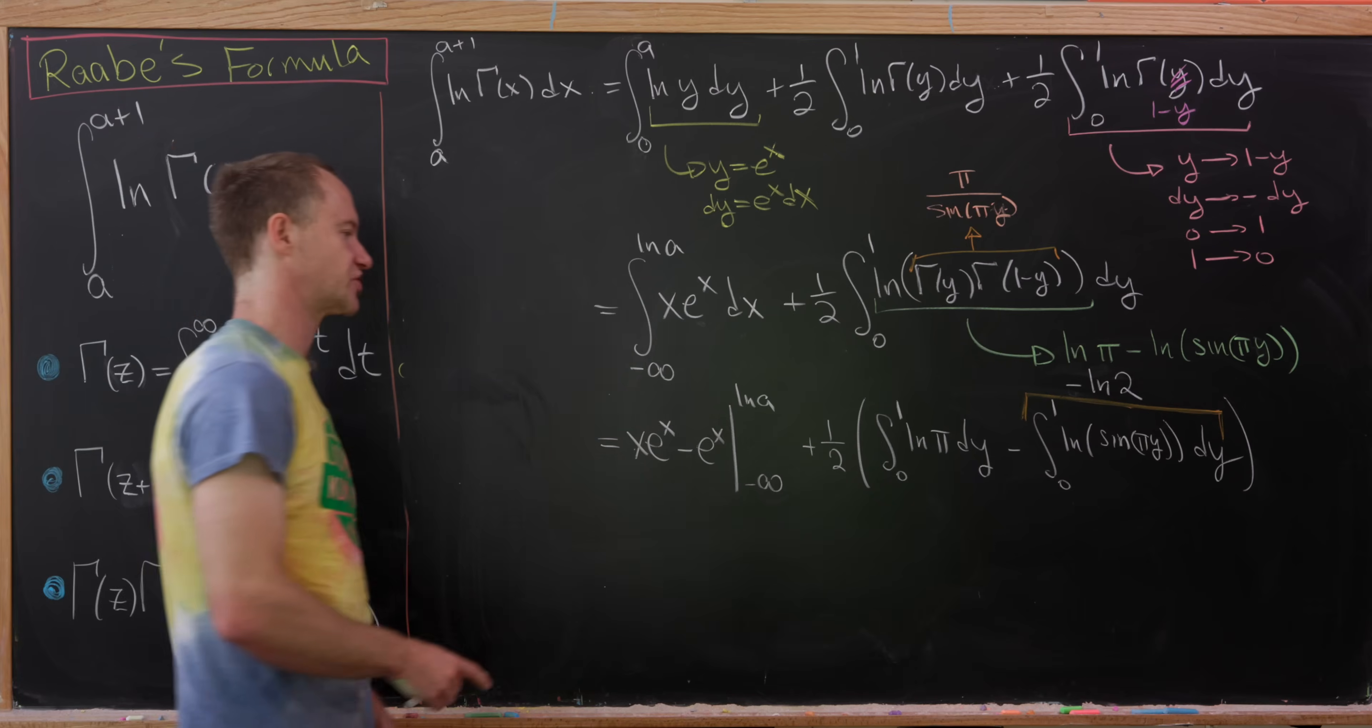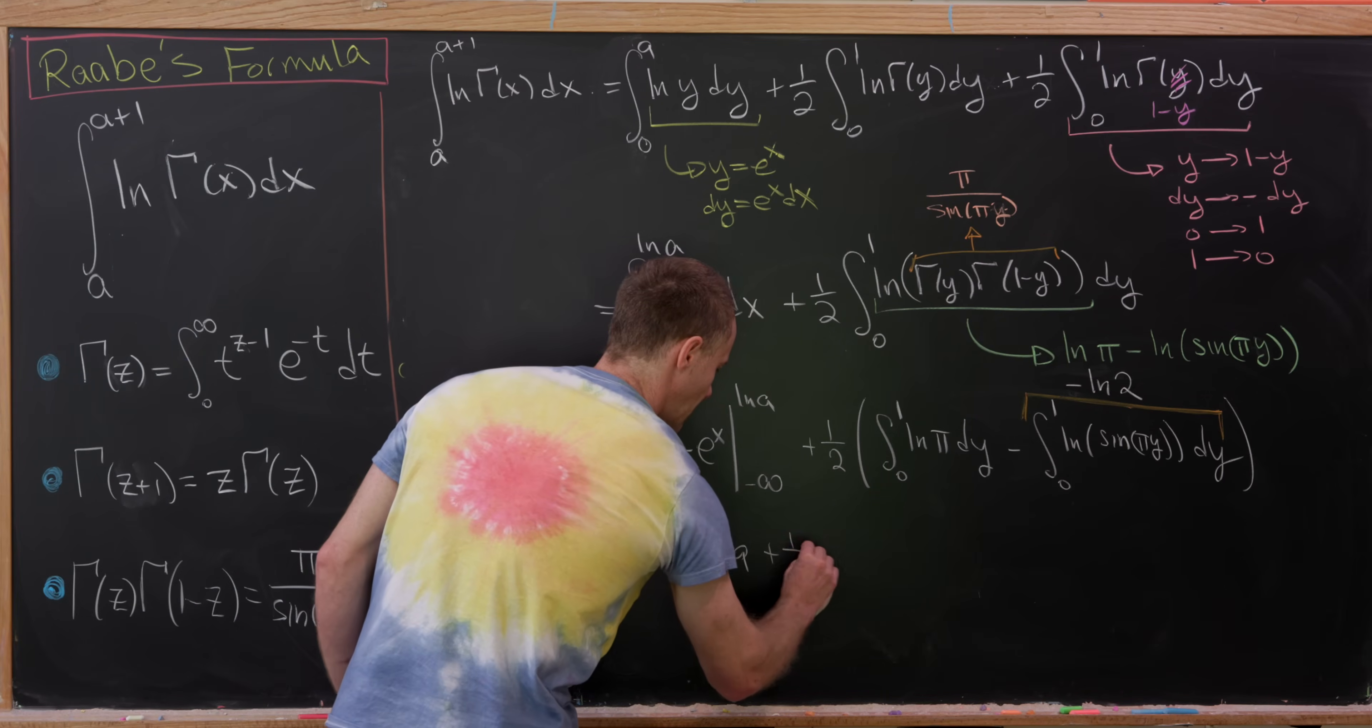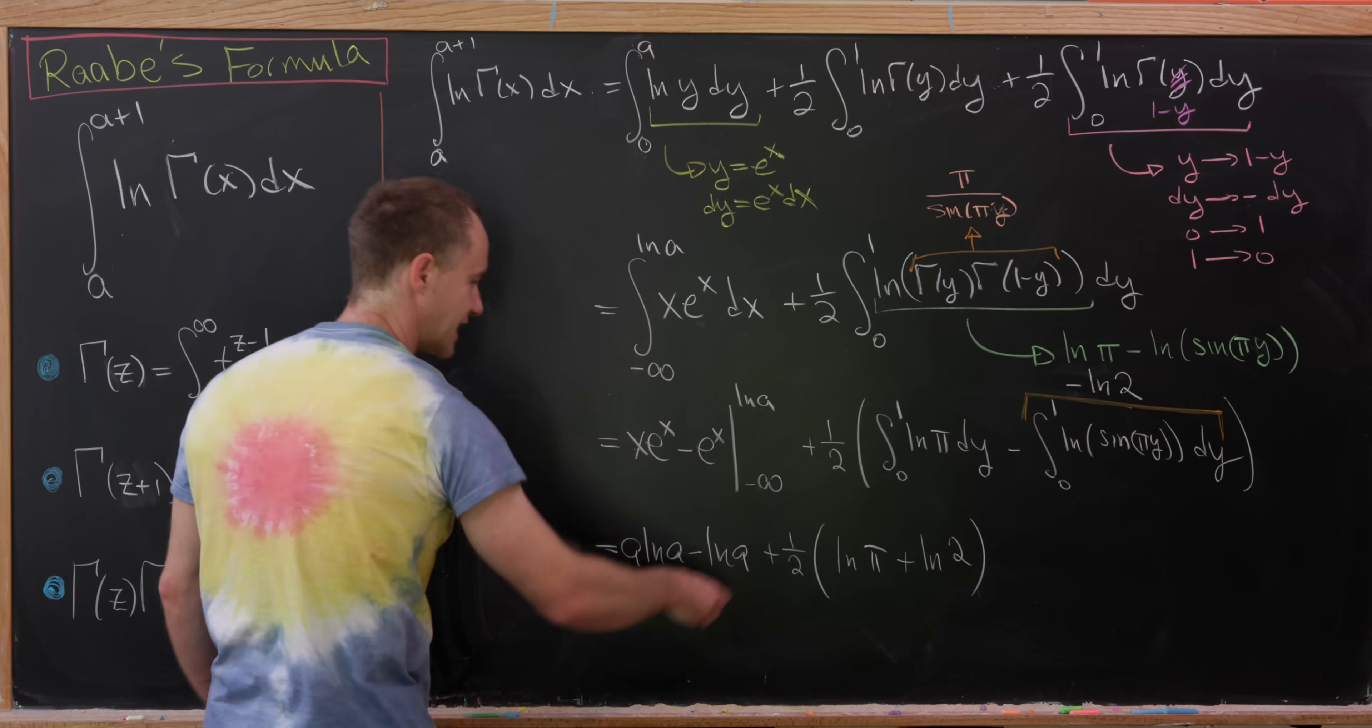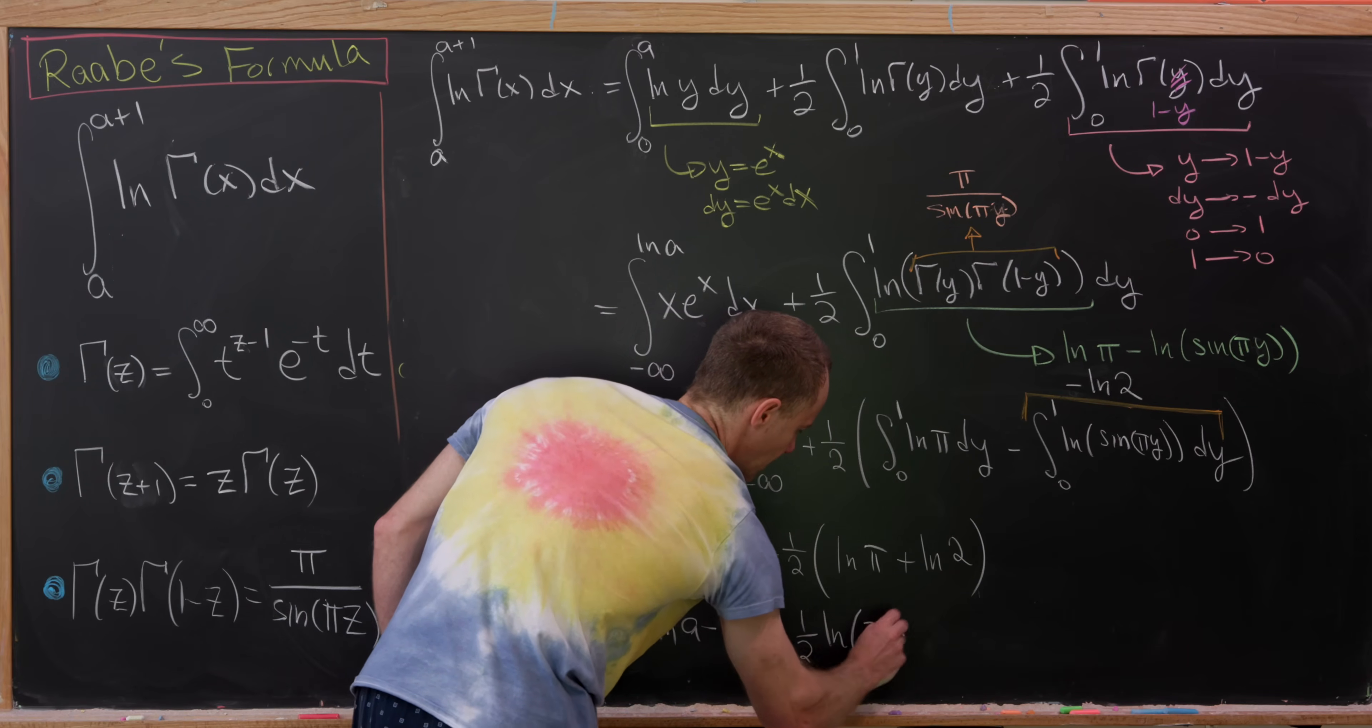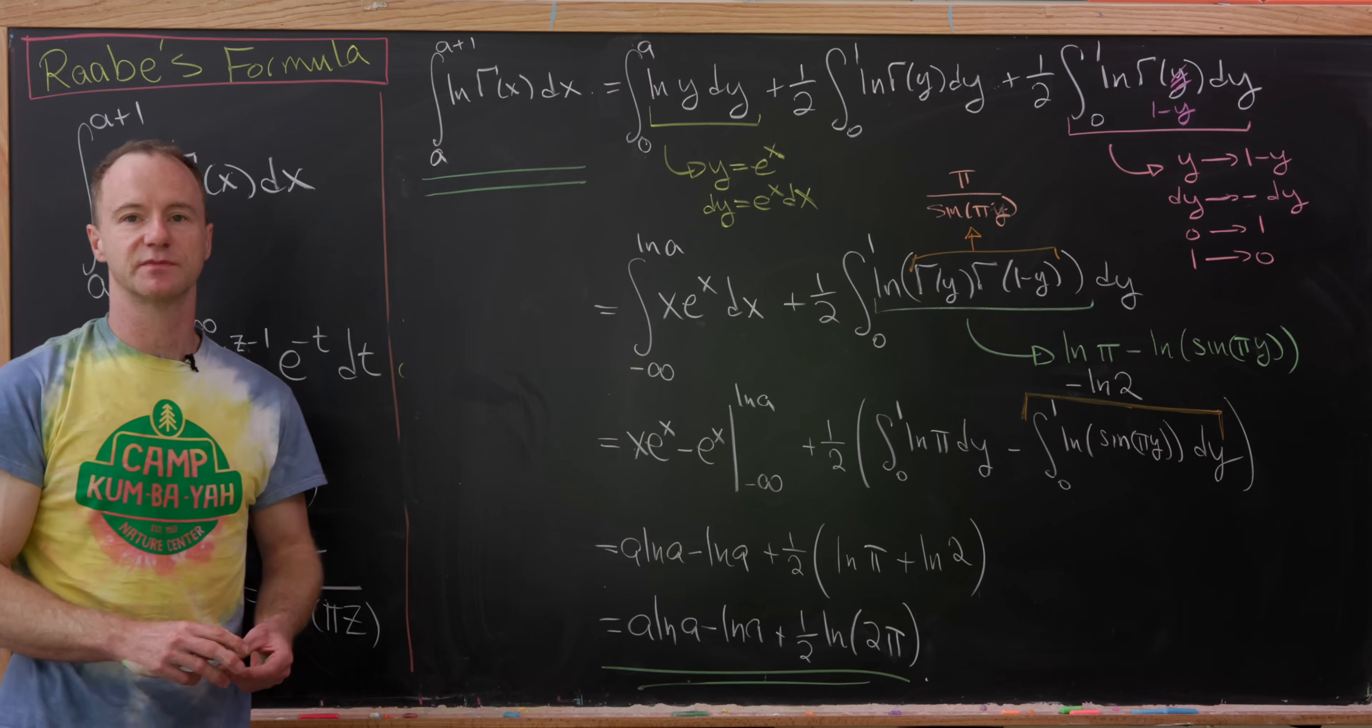Now we're ready for our final calculation. So plugging in natural log of a here will give us a times natural log of a minus natural log of a. Letting x approach minus infinity will give us 0. And then we'll have plus one half. This first integral will give us natural log of pi. The second one, in the end, will give us plus natural log of 2. But now we can smoosh those two together. After bringing all this down, we'll have plus one half times the natural log of 2 pi. And that's our final answer. So if you read this all the way from the left to the right, that's what you would maybe see as Raabe's formula. And that's a good place to stop.